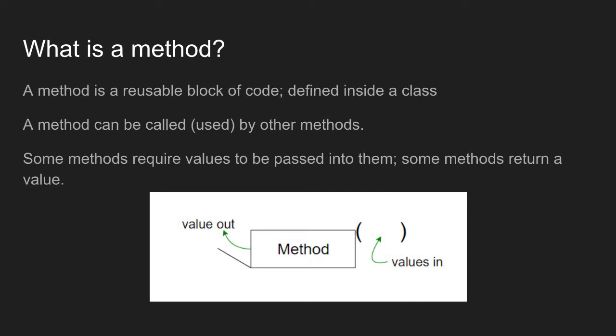Here I have a graphic that describes a method as just a box of code, a box of statements. All methods are going to have a pair of parentheses attached to the name. These parentheses are where values are passed into the method so it can do its job. Then some methods, when they are done, are going to return a value — shown here as a little door opening off the back of the method.